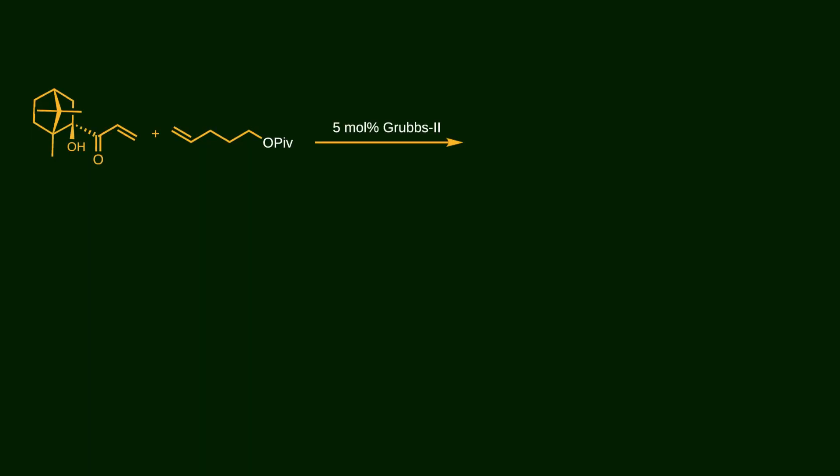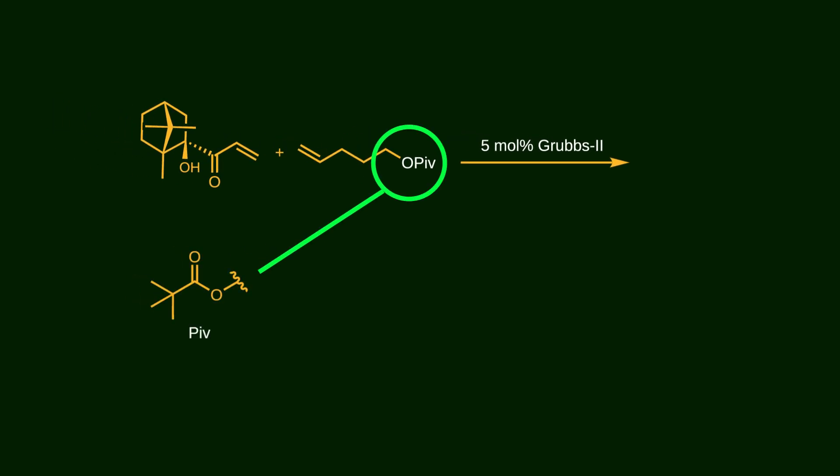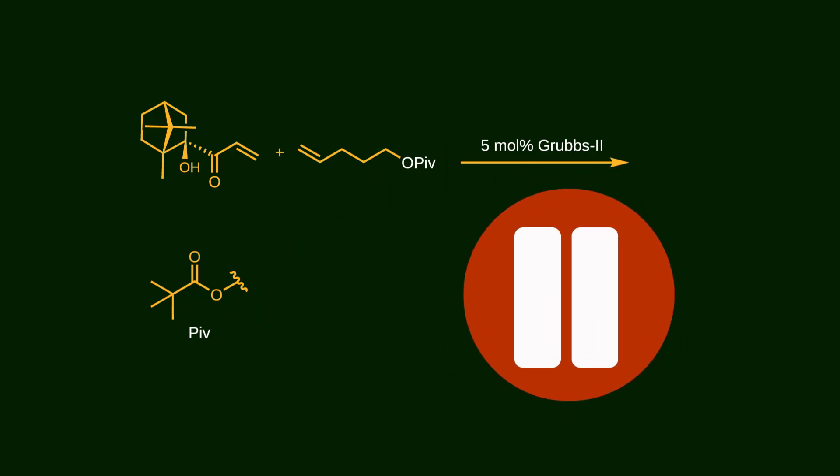In the next step, the unsaturated ketone reacts with a double bond whose ester tail is protected by a pivaloyl group. This is an intermolecular alkene metathesis reaction. Pause the video and try to provide a mechanism based on what you learned at the beginning of the video. Go ahead and give it a shot now.